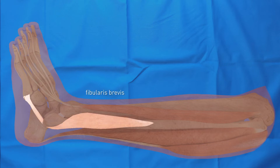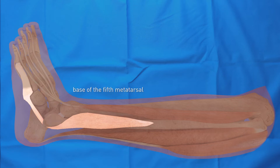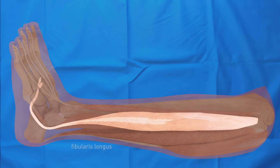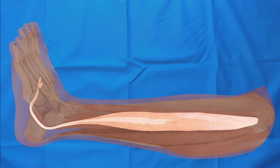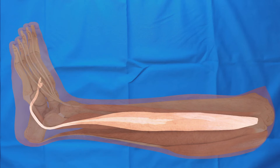The fibularis brevis runs posteriorly around the lateral malleolus and attaches to the base of the fifth metatarsal bone. Eversion of the foot is performed through this muscle and its corresponding tendon. The fibularis longus lies superficial to the fibularis brevis and runs similarly around the lateral malleolus, then continues under the foot to the medial side where it attaches to the medial cuneiform and first metatarsal bone. Eversion and plantar flexion of the foot is performed through this muscle and corresponding tendon.